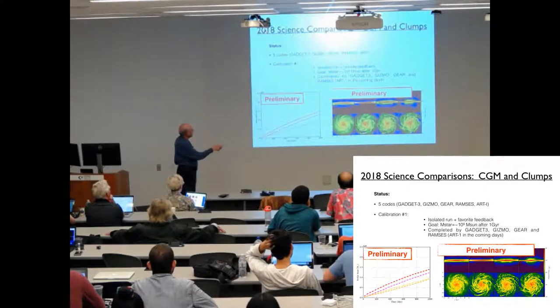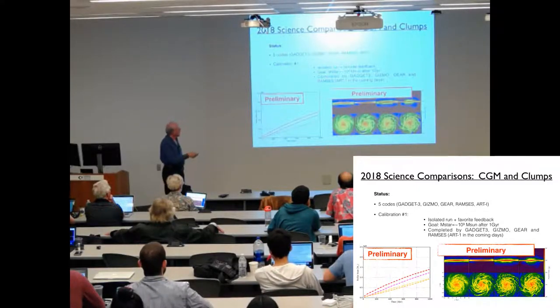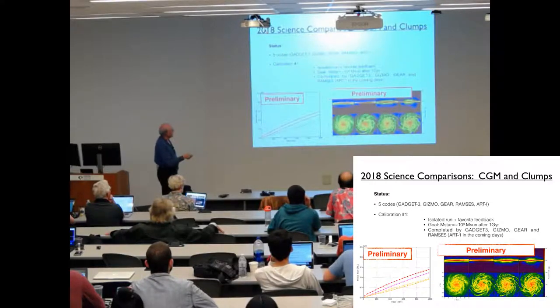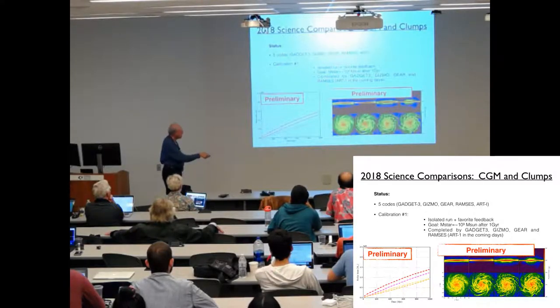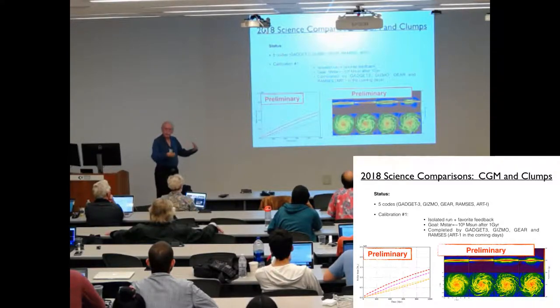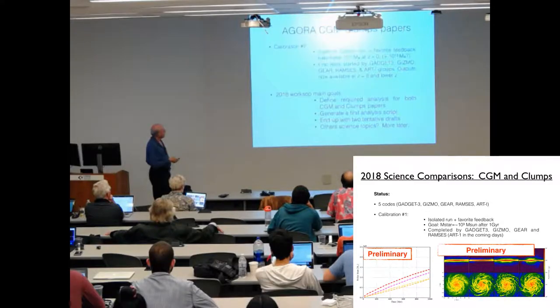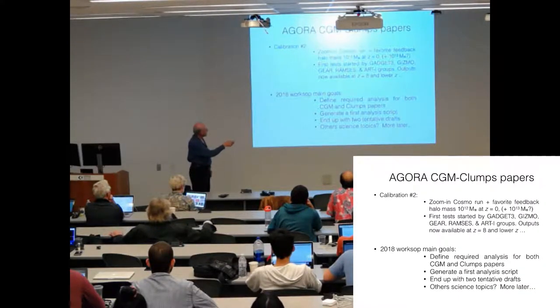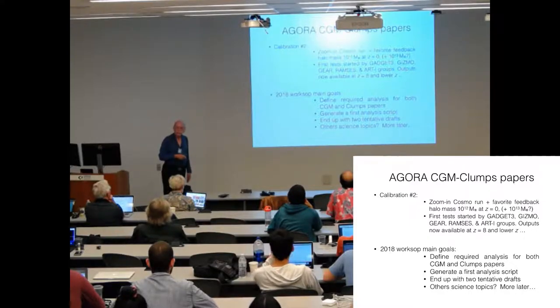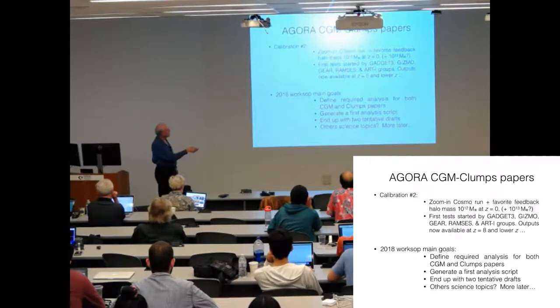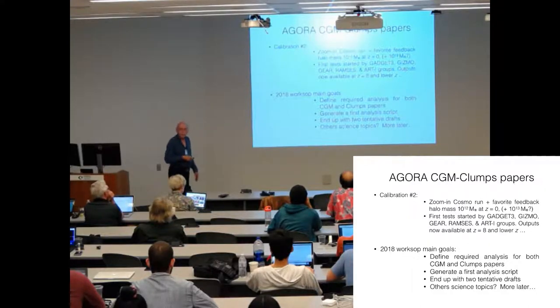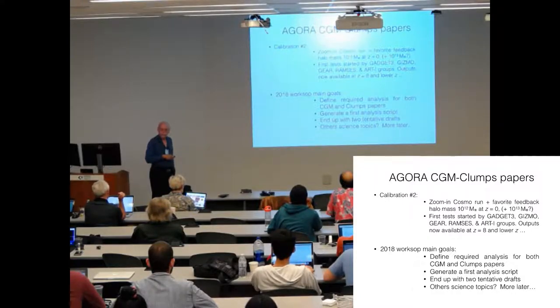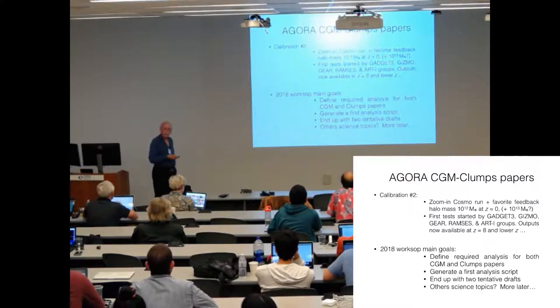So five codes are actually producing results. The ART results are still coming. We already have results down to redshift 10 or 9 or 8, and in some cases even lower, from cosmological zoom-in simulations from all of these. The first step, which we have results for now from four codes, with results coming very soon for ART, is just an isolated disk. Basically the same isolated disk as we used for paper two. So that's what these are. And it's just to get everybody on the same page as far as setting up their code properly. And so ART1 will be coming very soon.